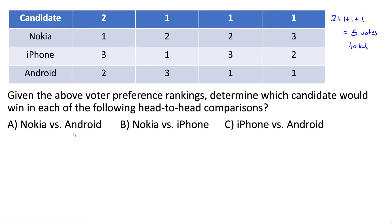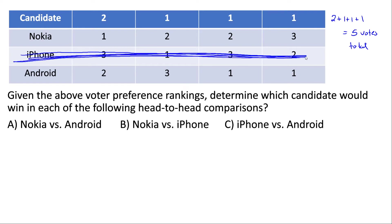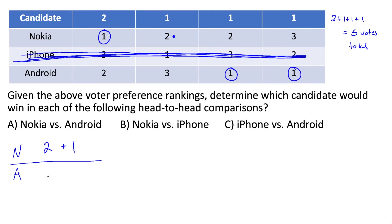Now let's take a look at Nokia versus Android. We're going to treat this like a runoff problem — we're going to get rid of the other candidate and figure out how everybody votes. Two voters have their first choice still there, so they vote for them. One voter chooses between their second and third choice; their second choice is more preferred, so that's who they vote for. The next two groups of one voter each still have their first choice, so they vote accordingly. Nokia ends up getting three and Android gets two, which adds up to five — the correct number of votes — and Nokia is our winner.